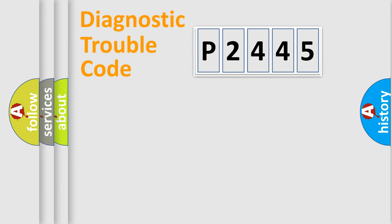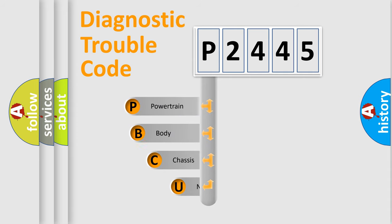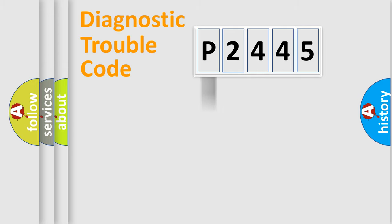First, let's look at the history of diagnostic fault code composition according to the OBD2 protocol, which is unified for all automakers since 2000. We divide the electric system of an automobile into four basic units: Powertrain, Body, Chassis, and Network.